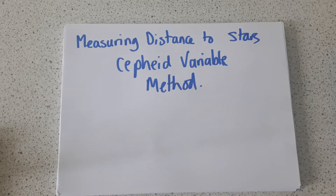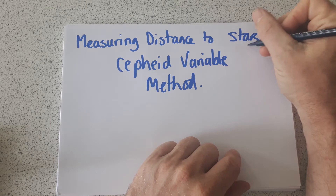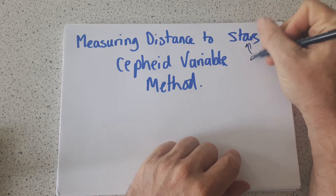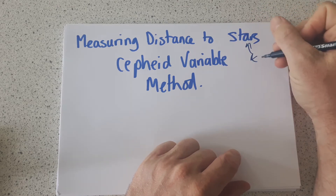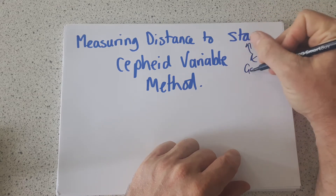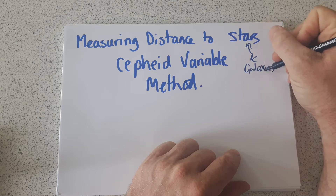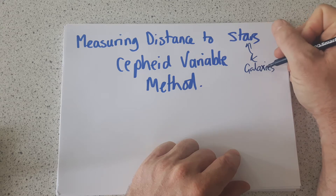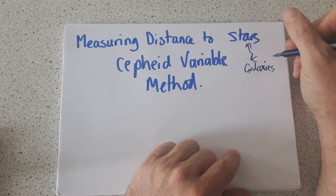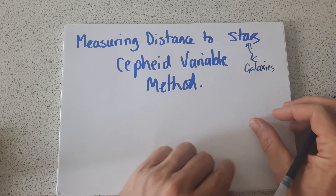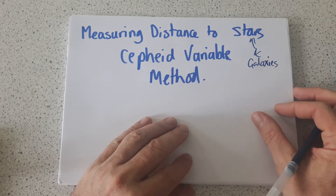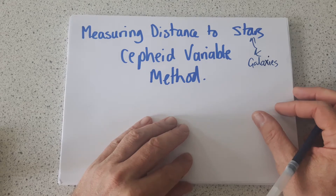This method of measuring the distance to stars or galaxies is called the Cepheid variable method, and it's one of the methods you can use alongside parallax to measure how far away a star or galaxy is.